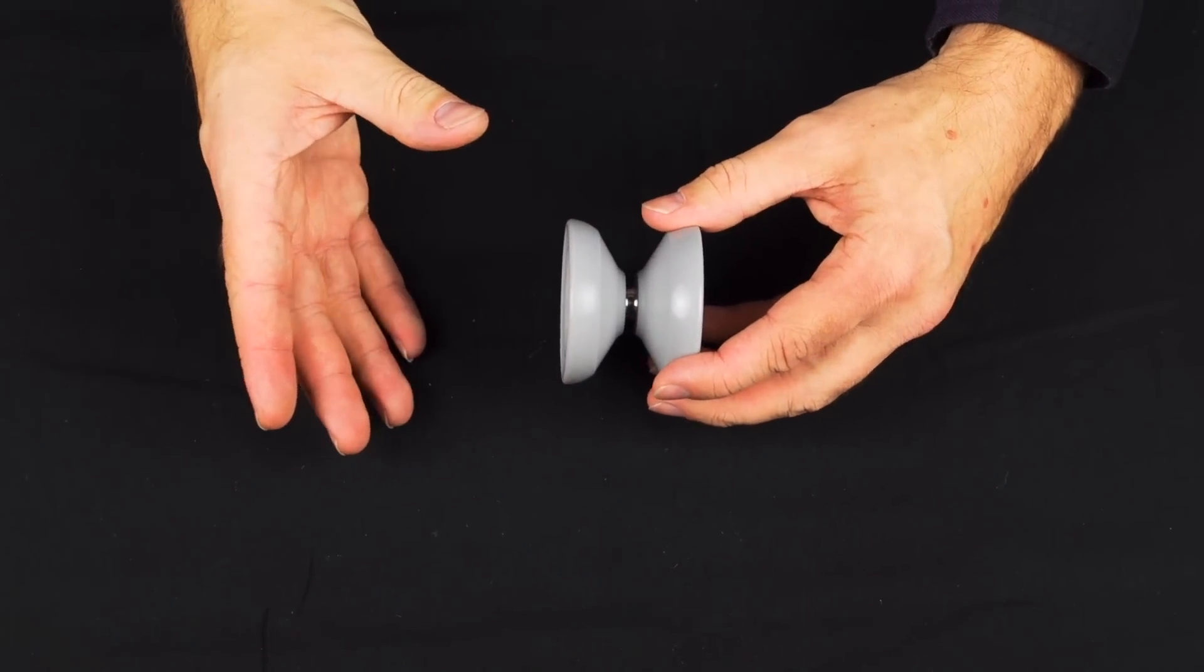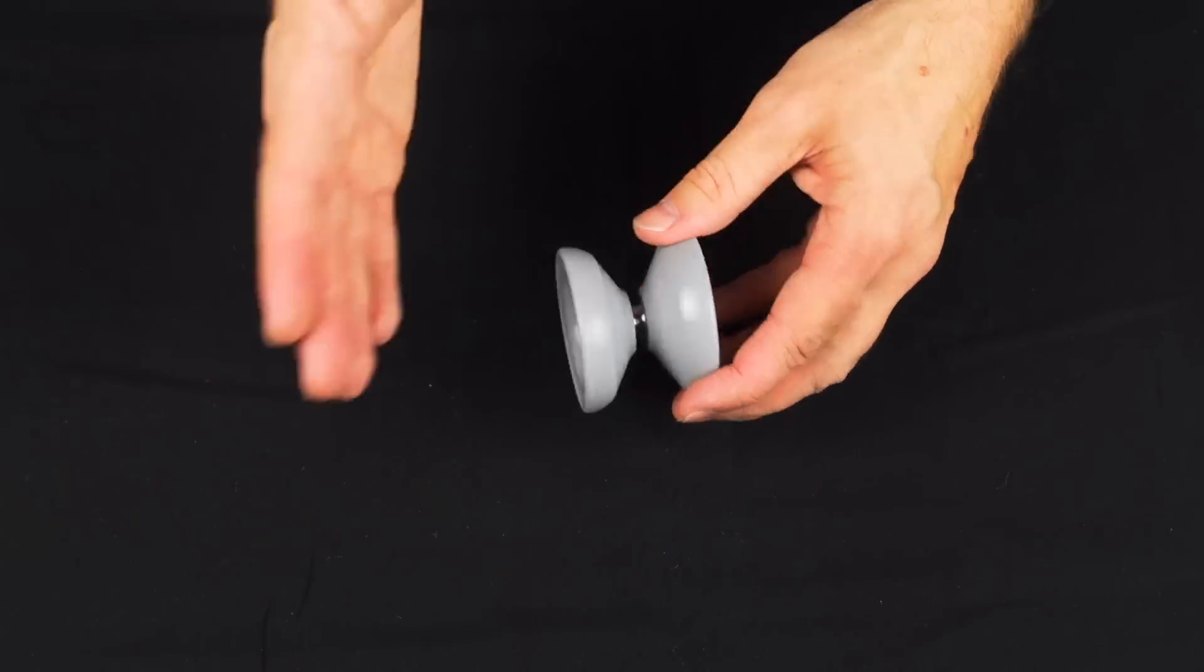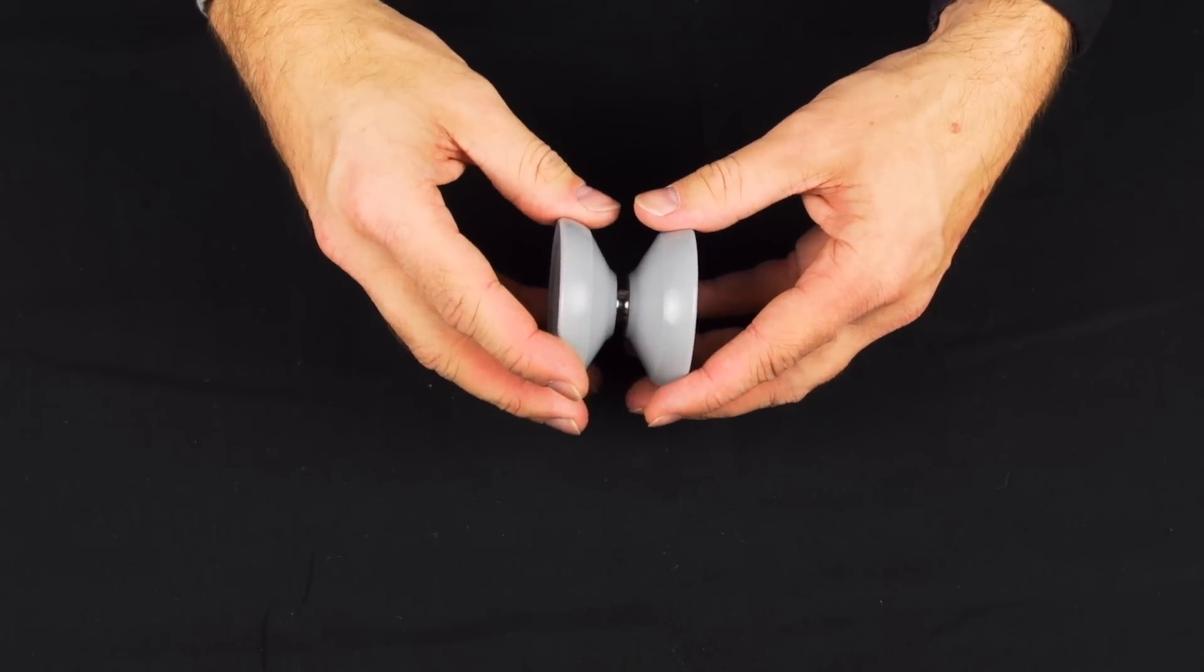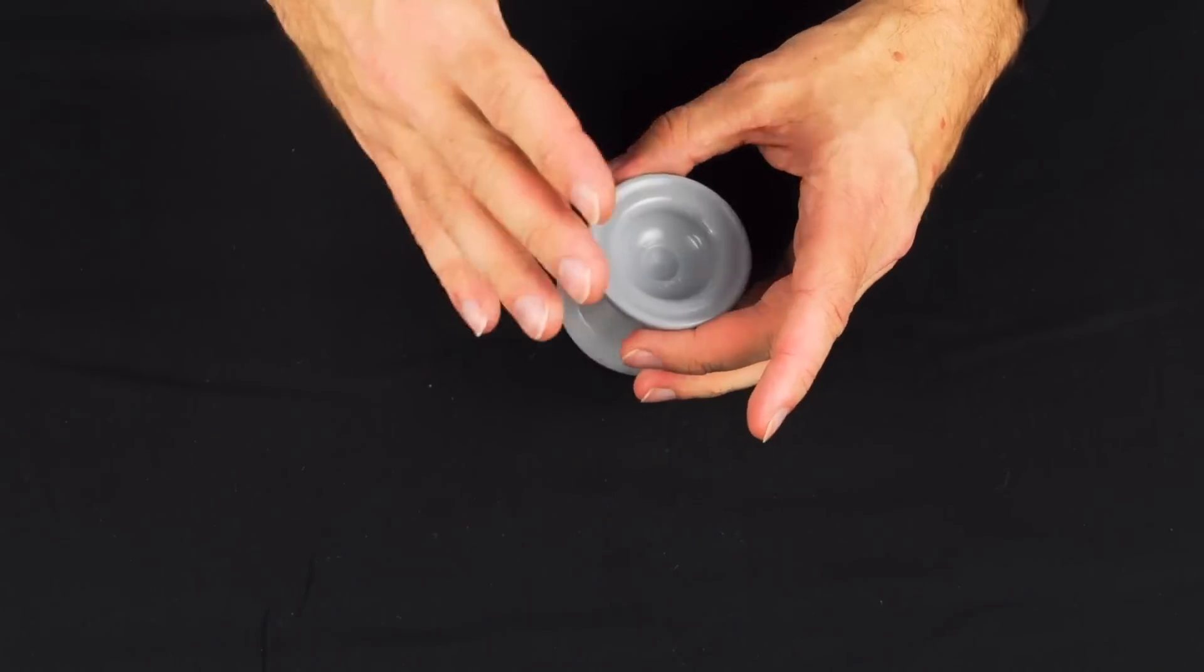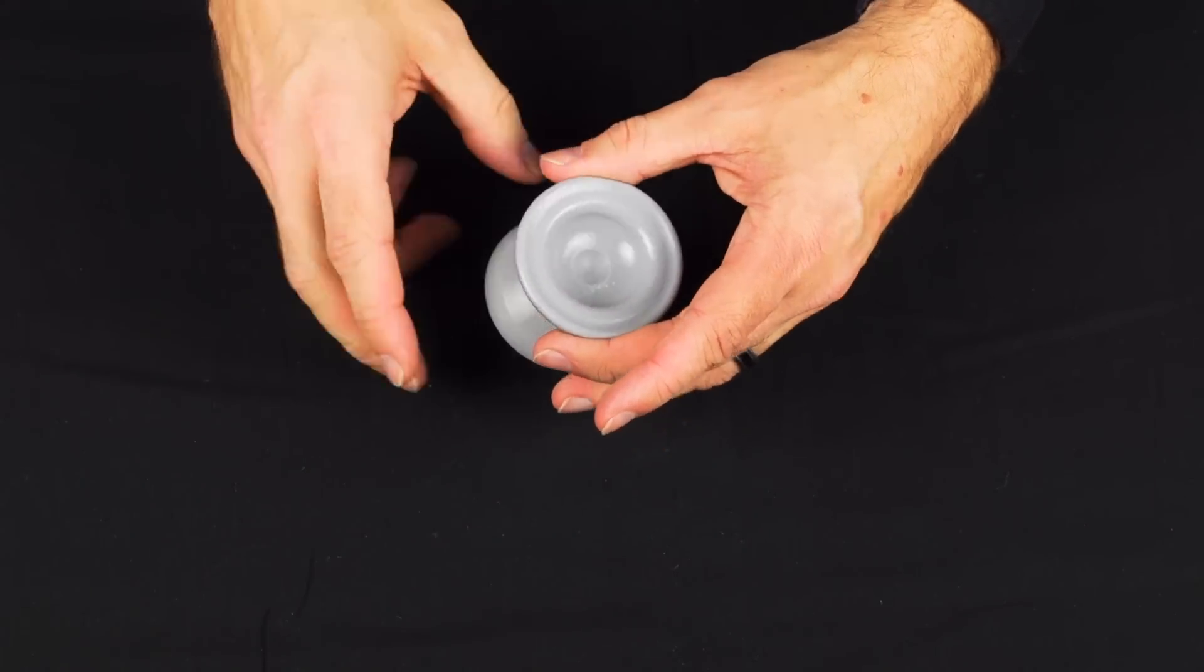In general, it plays on the lighter side, which makes it a super fun yoyo because it's a little bit faster. It plays light, which means it's really easy to use. It's really good for finger spins,